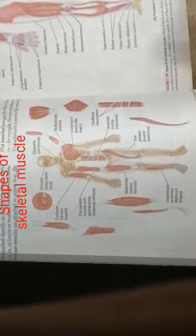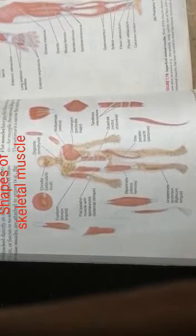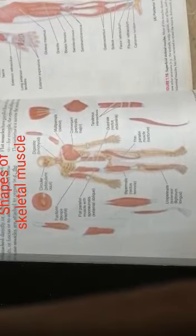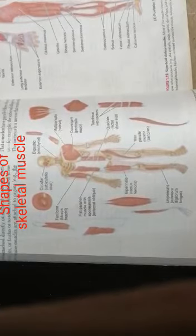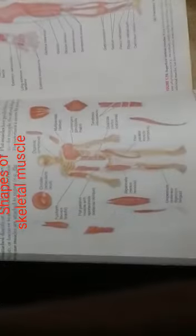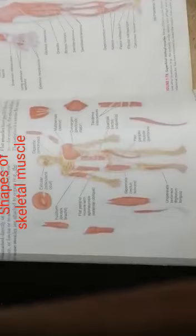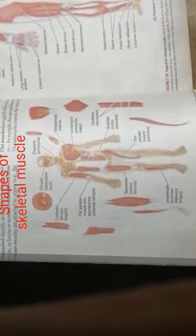The skeletal muscle has different shapes present in our body, including multipennate, bipennate, fusiform, sartorius-like, rectus-like, quadrilateral-like, and many other shapes.